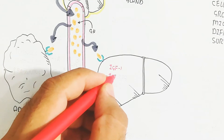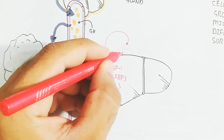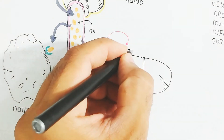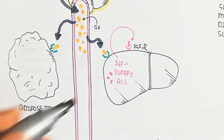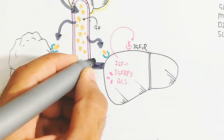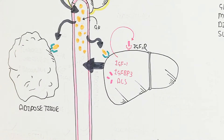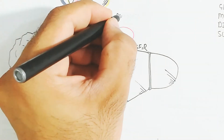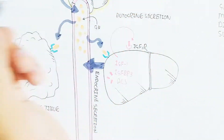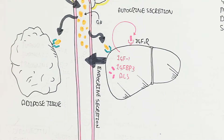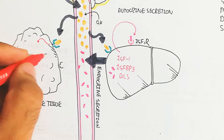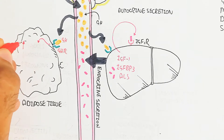IGF-1 is triggered in the liver, binding with insulin-like growth factor binding protein 3 (IGFBP-3). IGF-1 also functions with ALS. IGF-1 can act autocrinally or endocrinally when it enters the blood circulatory system and binds with adipocytes.